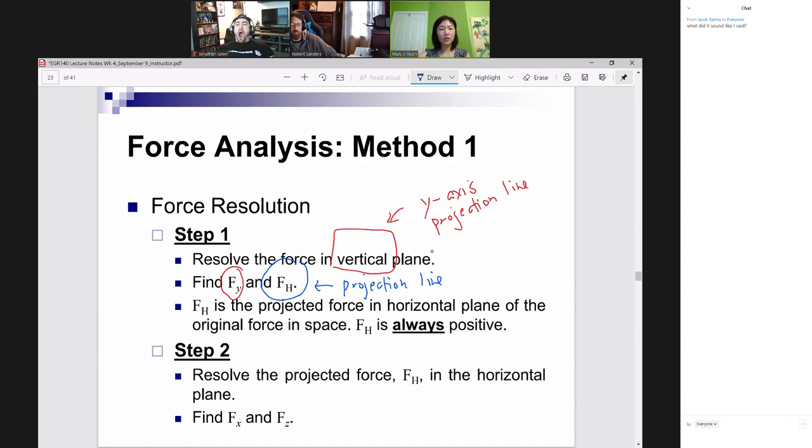Step two, we're going to now take F sub h, the image of the force on the floor in the horizontal plane, and we're going to resolve that into x and z components. This is your x-z plane. And therefore, we're going to find F sub x and F sub z. So we got three rectangular components: F sub x, F sub y, and F sub z. But first, we're going to find F sub y in the vertical plane. And then in the horizontal plane, we're going to find F sub x and F sub z.